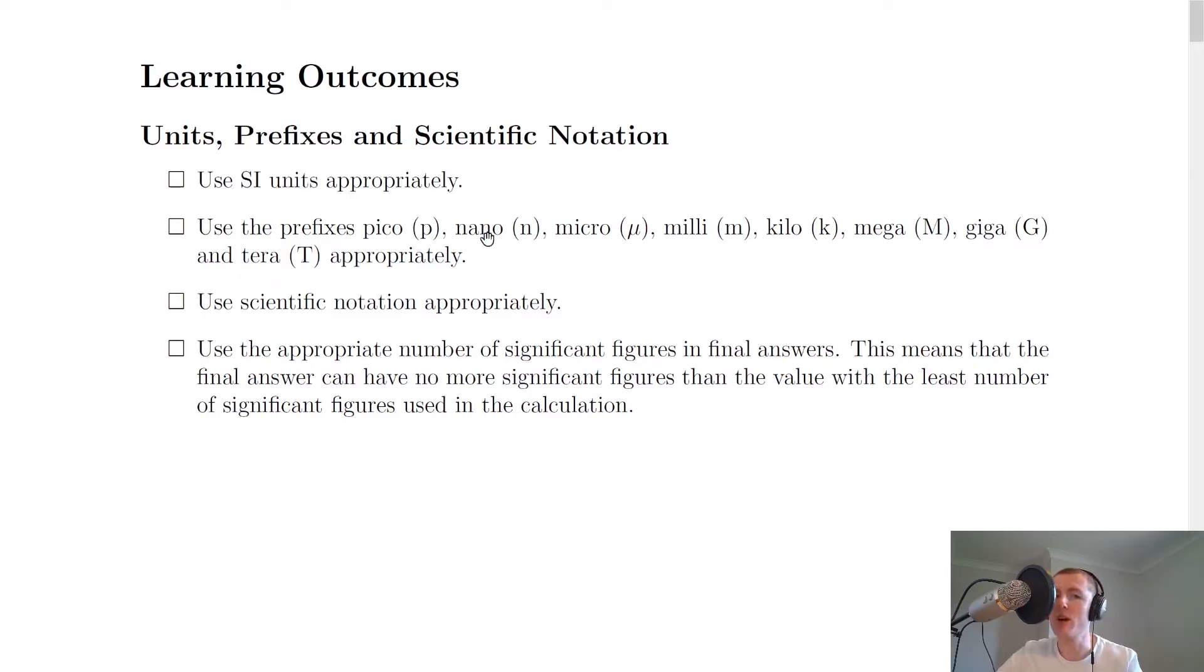Use the prefixes pico, nano, micro, milli, kilo, mega, giga and tera appropriately. So you need to be able to replace these prefixes with their given number in scientific notation. So pico was times 10 to the minus 12, nano was times 10 to the minus 9, micro was times 10 to the minus 6, milli times 10 to the minus 3, kilo times 10 to the positive 3, mega times 10 to the power of 6, giga times 10 to the power of 9, and lastly tera was times 10 to the power of 12.